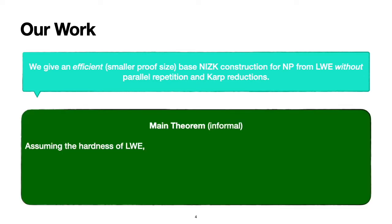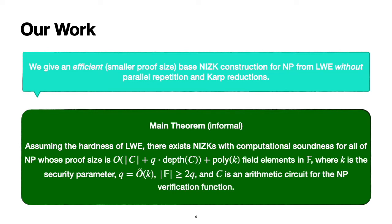Our main informal theorem statement is that assuming the hardness of LWE, there exists NIZKs with computational soundness for all of NP whose proof size is O(|C| + q · depth(C) + poly(k)) field elements in some finite field F, where k is the security parameter, q is quasi-linear in k, the size of the field is larger than 2q, and C is an arithmetic circuit for the NP verification function for some NP language L.